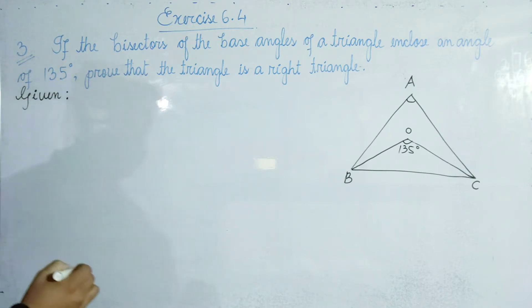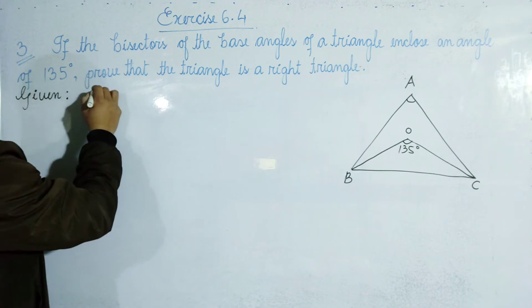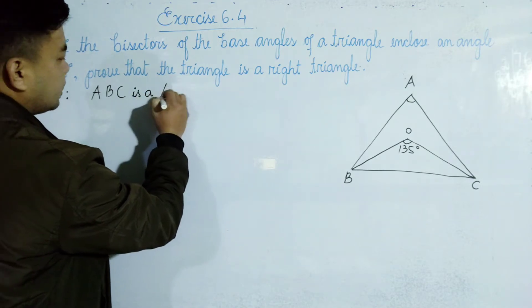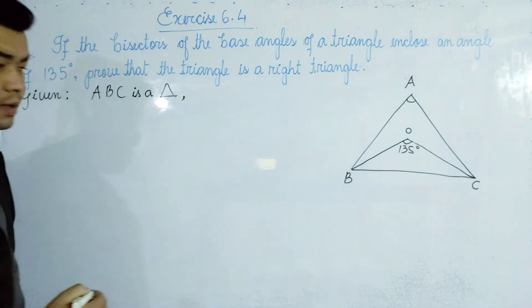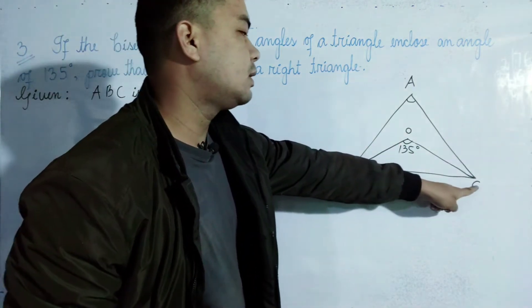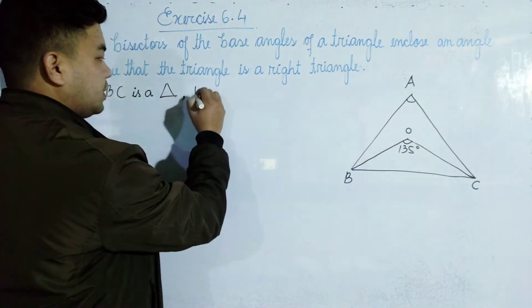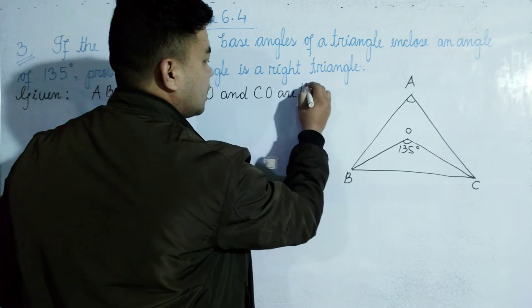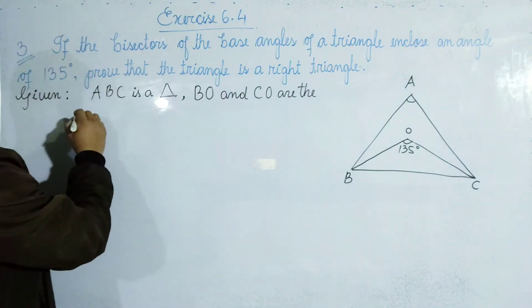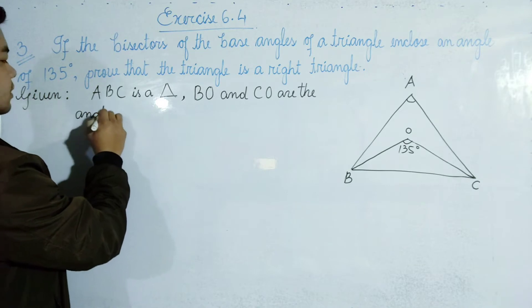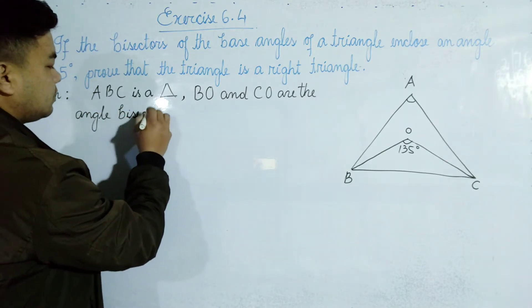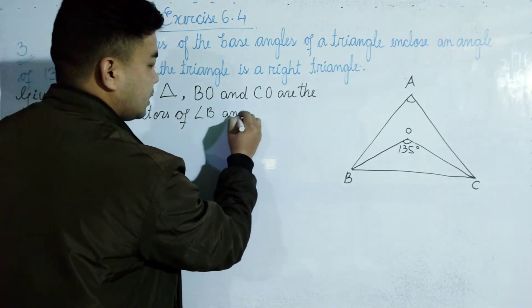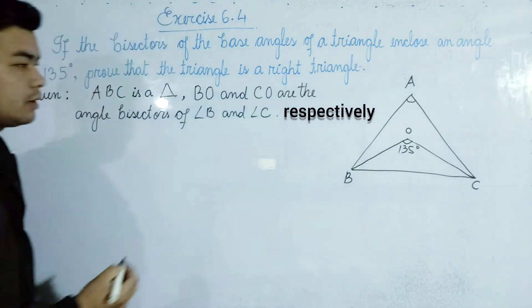We will consider triangle A, B, C. BO and CO are the angle bisectors of angle B and angle C respectively.